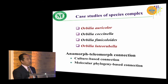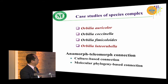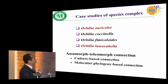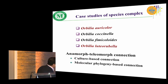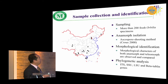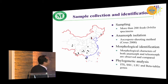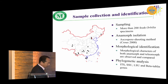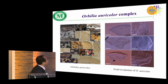Five years ago we had another student working specifically on anamorphic and telemorphic collections based on culture isolation and also molecular phylogeny. He studied four species of Orbilia — here I just show two of them. For one, he collected more than 2,000 fresh Orbilia and used the ascospore shooting method to isolate the anamorphic stage, and also performed morphological identification and phylogenetic studies with multiple genes.